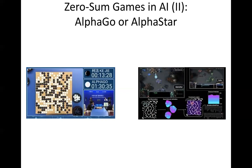Another application connected to zero-sum games is the AlphaGo or AlphaStar architecture — systems developed by DeepMind to create agents capable of playing the game of Go or the computer game StarCraft at a superhuman level. At their core these architectures have the idea of a zero-sum game where two artificial agents play against each other, and through this internal competition they manage to create agents with superhuman capabilities.